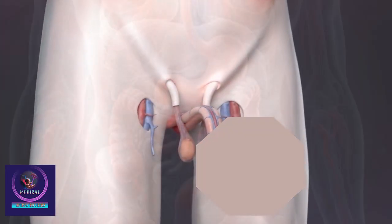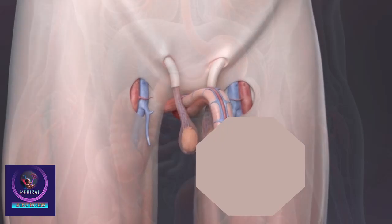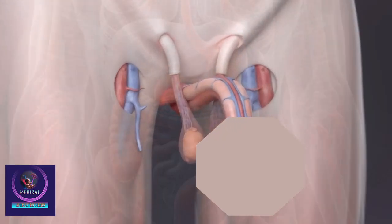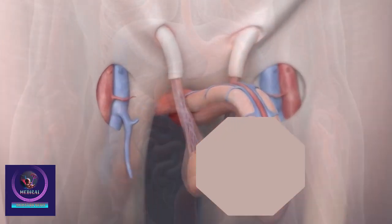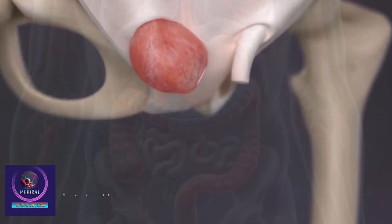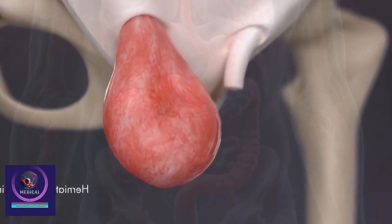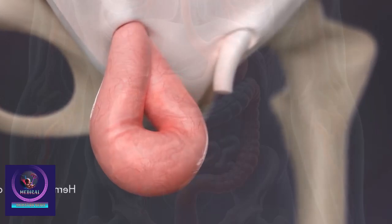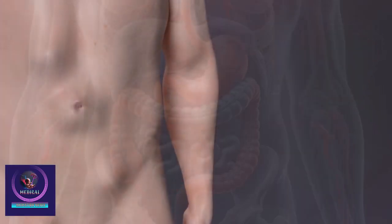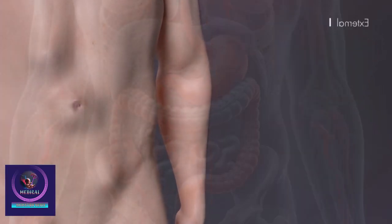Hernia refers to a condition in which organs in the body are out of place and protrude or stick out through other tissues. There are two types of hernias: external and internal.